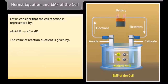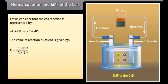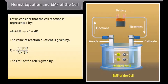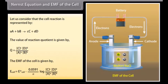The value of the reaction quotient is given by: Q = [C]^c × [D]^d / ([A]^a × [B]^b). The EMF of the cell is given by: E(cell) = E°(cell) − (0.0591/N) × log([C]^c × [D]^d / ([A]^a × [B]^b)).